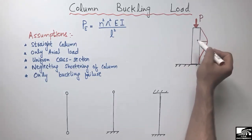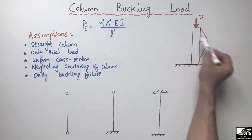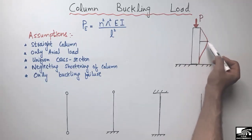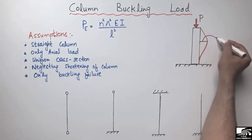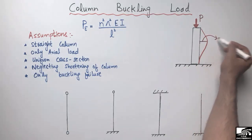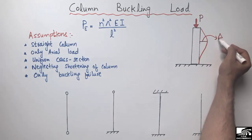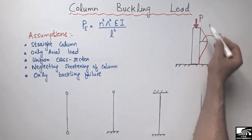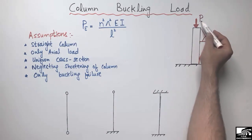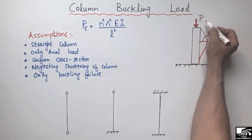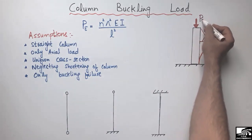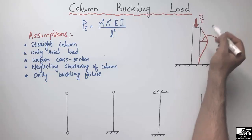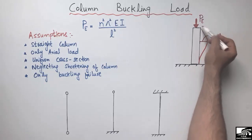The load at which the column starts buckling — you see here there is a lateral deflection, which I will represent by delta — this load is called the buckling load. We also call it the critical load or the Euler load.